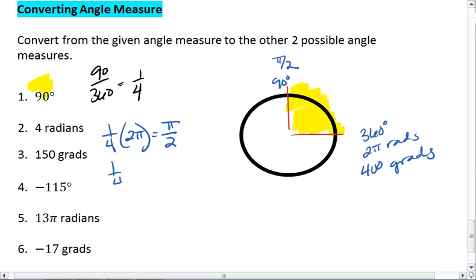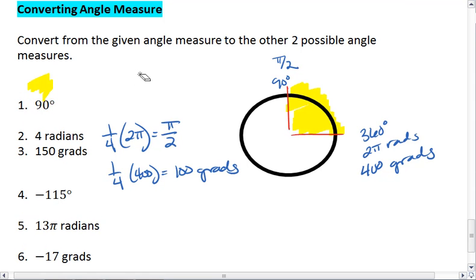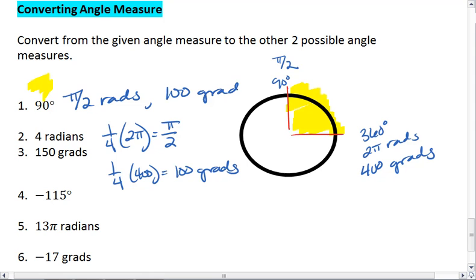If I have one fourth of a circle, this means I have one fourth of the possible 400 grads, or 100 grads. Thus, 90 degrees is the same as π over 2 radians, or 100 grads.